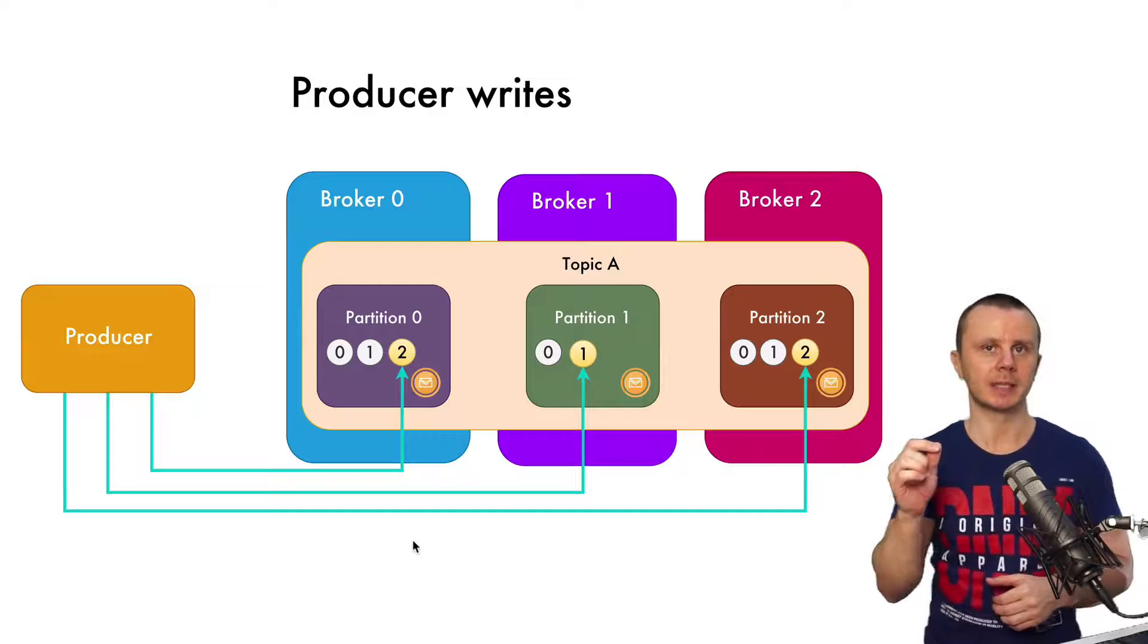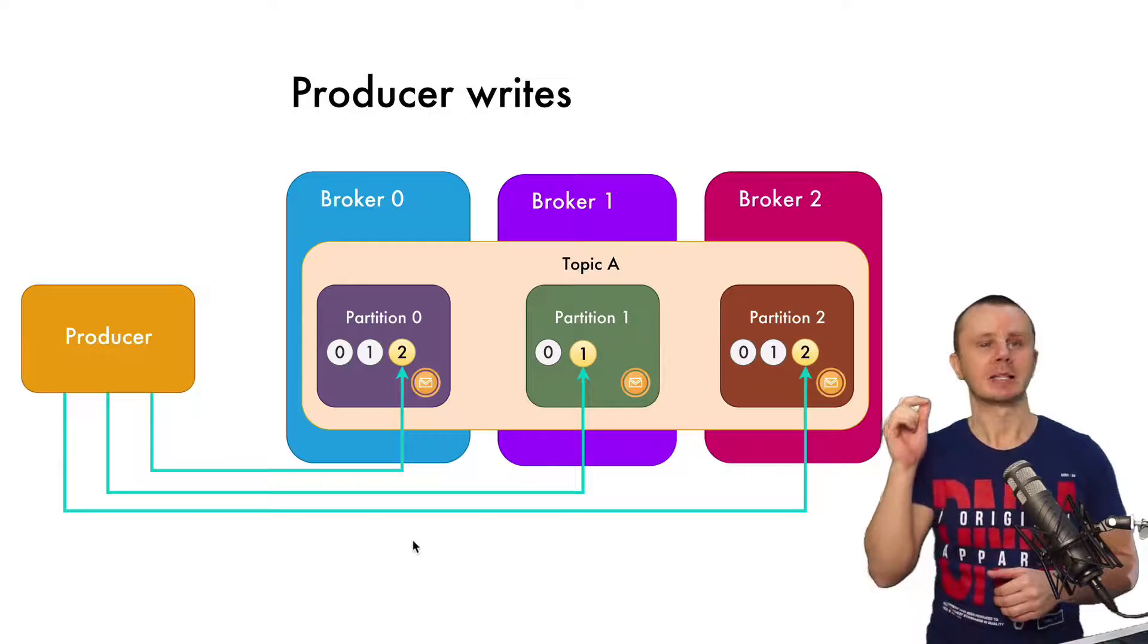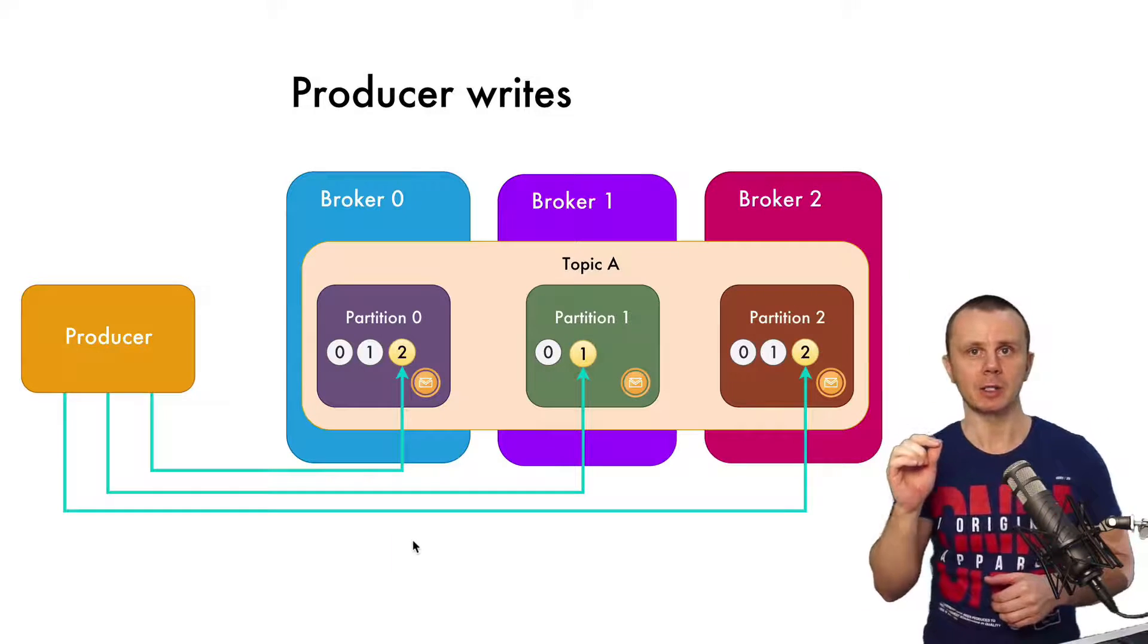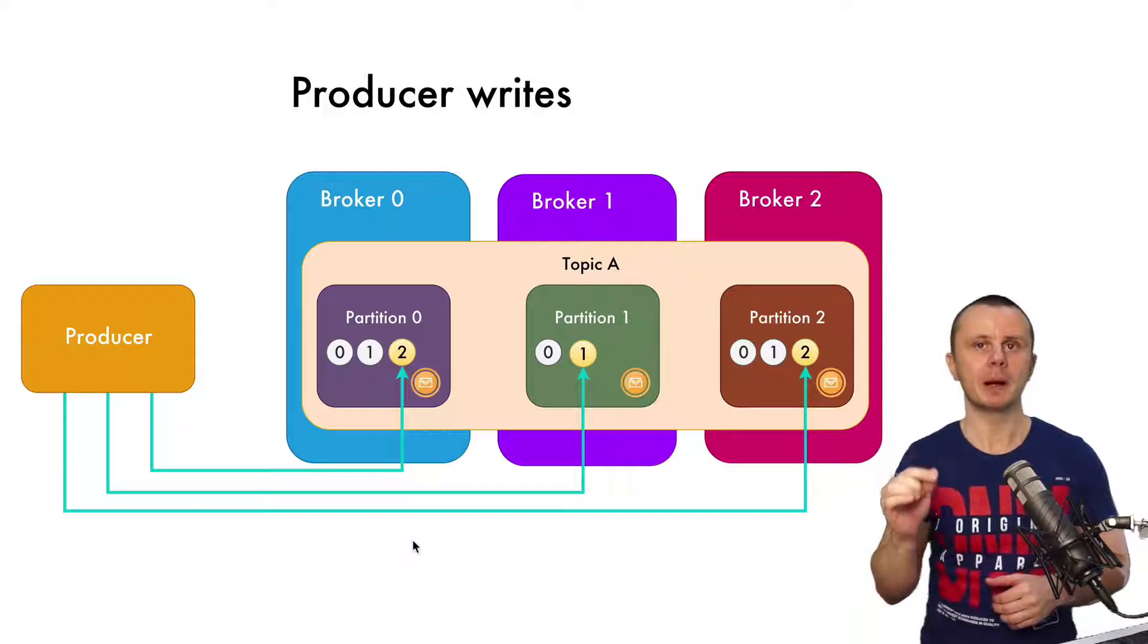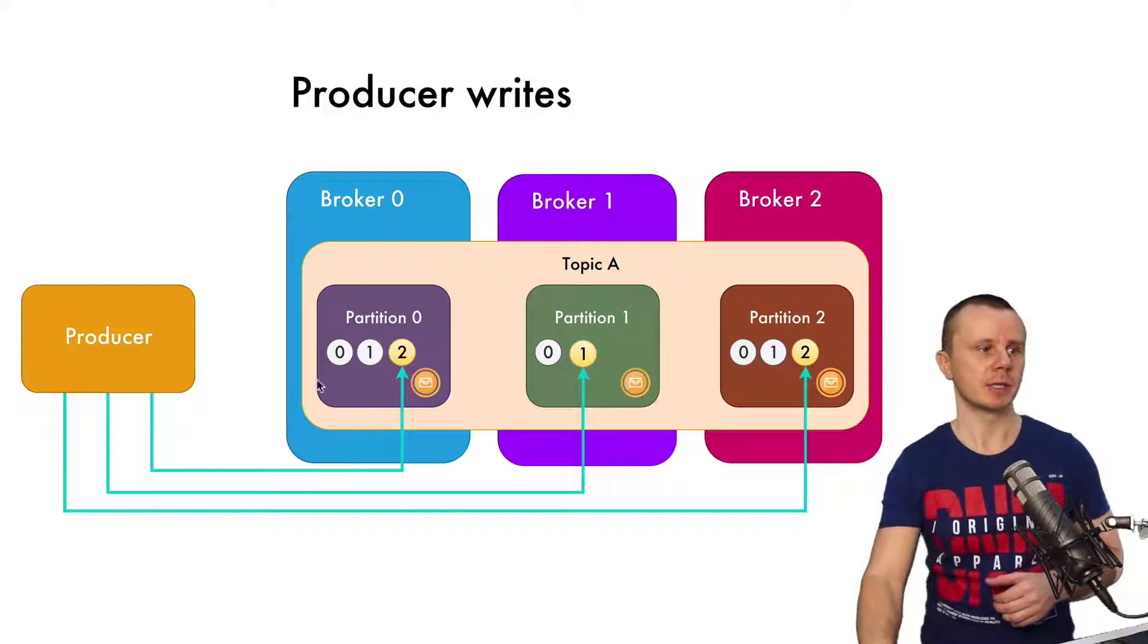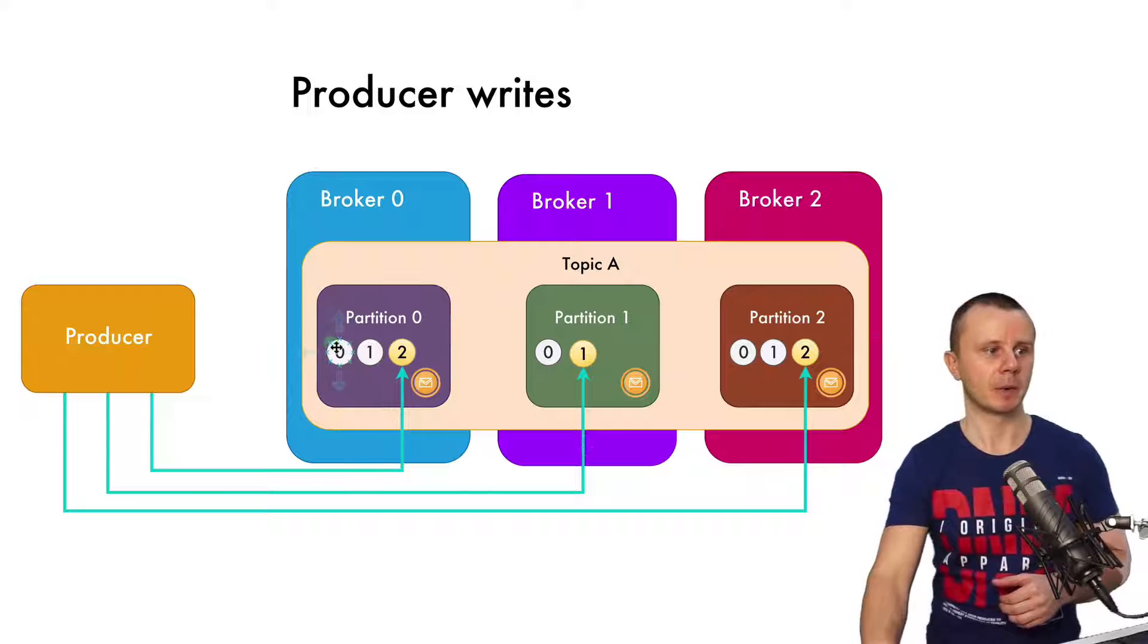Notice that every partition must have unique offset numbers for all messages, and the first offset number is zero. So in partition zero, the first message has offset number zero, and so on.